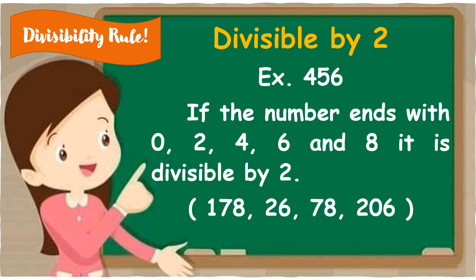Divisibility rule — divisible by 2. Example: 456. If the number ends with 0, 2, 4, 6, and 8, it is divisible by 2. Ang 456 ay nag-e-end sa 6, therefore it is divisible by 2. Another example: 178 — ang last number ng 178 is 8, therefore it is divisible by 2.